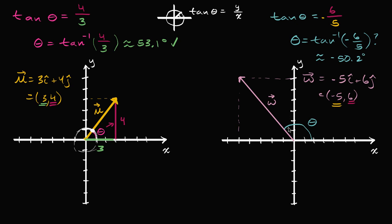Does negative 50.2 degrees look right? No — theta looks like it's over 90 degrees. Negative 50.2 degrees is actually giving us an angle in the fourth quadrant, specifying a different vector entirely. The key issue is that the arctangent function on calculators only gives angles between negative 90 and positive 90 degrees — first or fourth quadrant — but here we have a vector in the second quadrant.